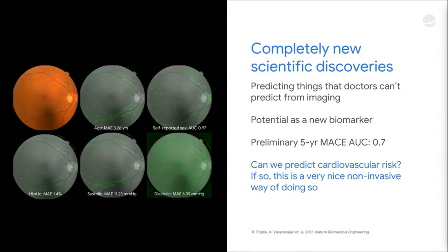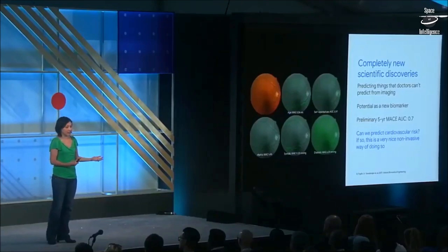We published a paper recently where we trained deep learning models to predict a variety of cardiovascular risk factors — including age, self-reported sex, smoking status, and blood pressure — things that doctors generally consider to assess a patient's cardiovascular risk and make proper treatment recommendations.